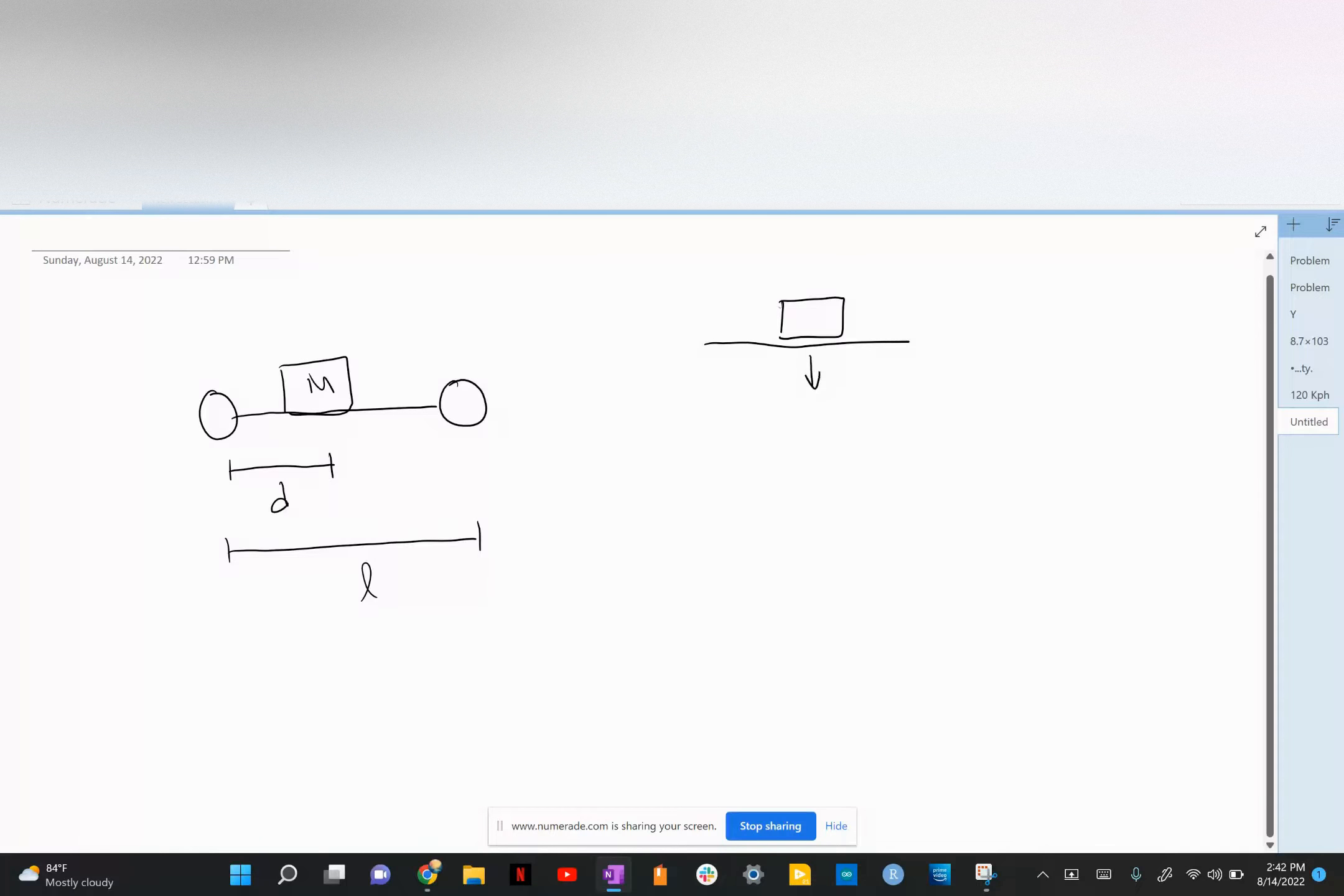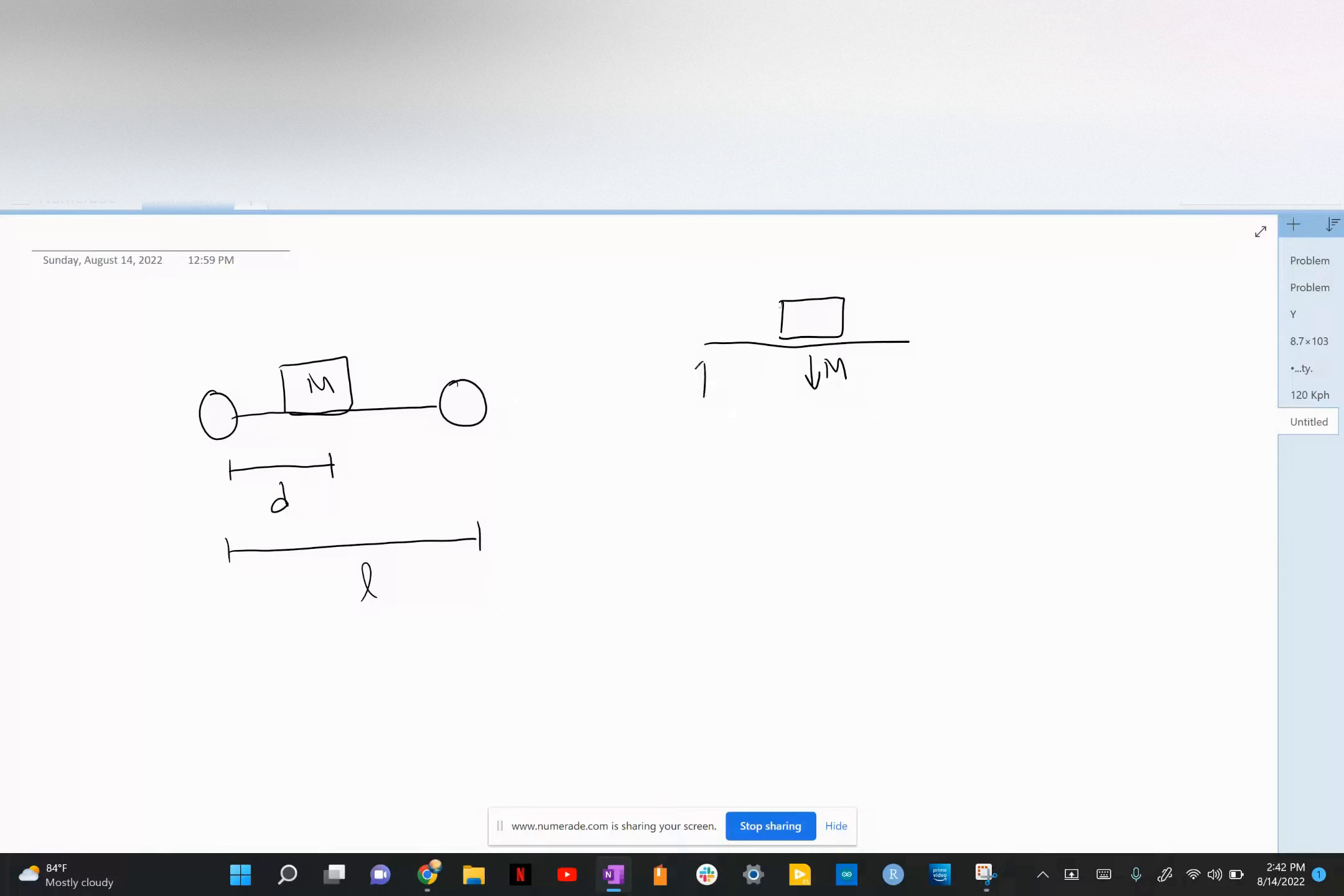We have the downward force of M, the rear wheel force up, and the front wheel reaction force up. So let's start with our three equations.